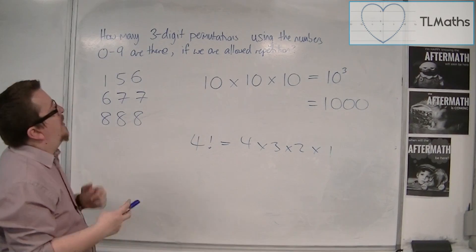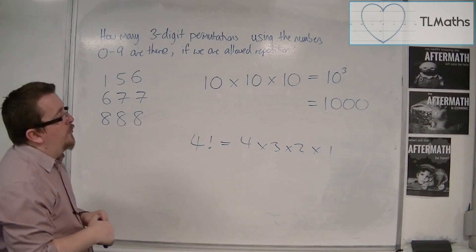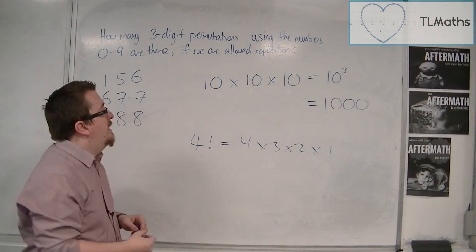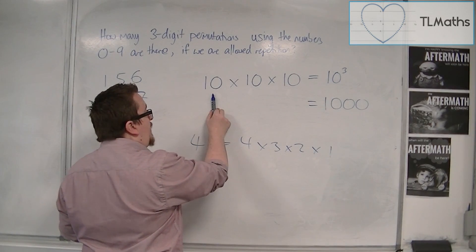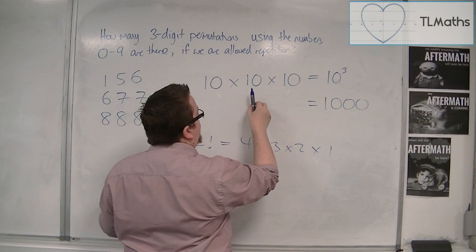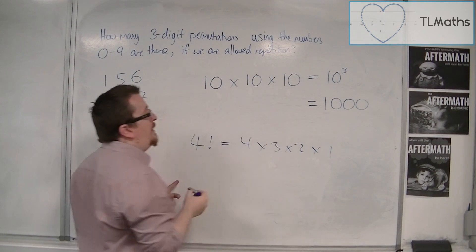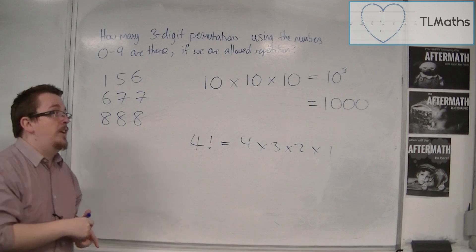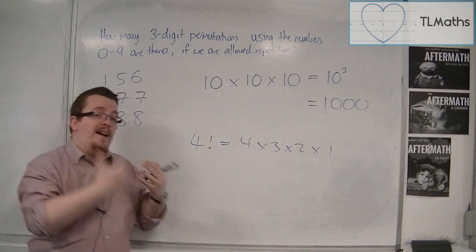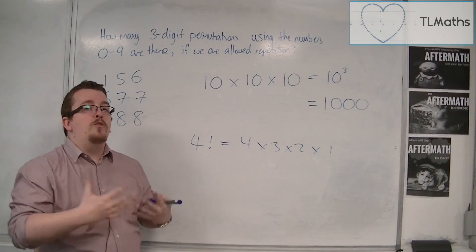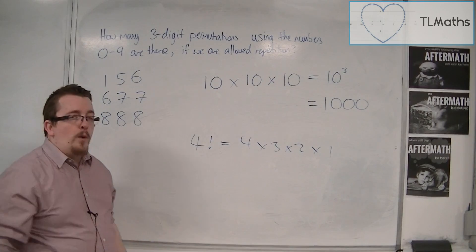If this was an example where I'm not allowed to have repetition, then I would have 10 choices initially. But then seeing as I've made a choice, I would then have 9 choices. And then if I made another choice, I would have 8 choices left. So it would be 10 times 9 times 8. And that is how the problem would differ. So we've got to read the question carefully.